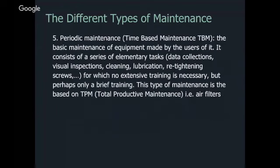Periodic maintenance is time-based maintenance — probably the most common and the most basic, with elementary tasks you can assign to entry-level techs without heavy training. A great example is an air filter: time-based maintenance means every three months you go into each specific air handler or fan coil and change out the air filter. It's based solely off time, not condition.